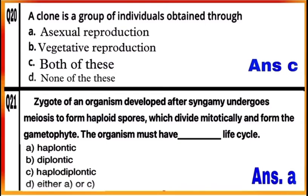Question 21: The zygote of an organism developed after syngamy undergoes meiosis to form haploid spores, which divide mitotically and form the gametophyte. The organism must have a haplontic life cycle, where the adult organism is haploid, having half the number of chromosomes present in the zygote. So mark A as the correct answer.